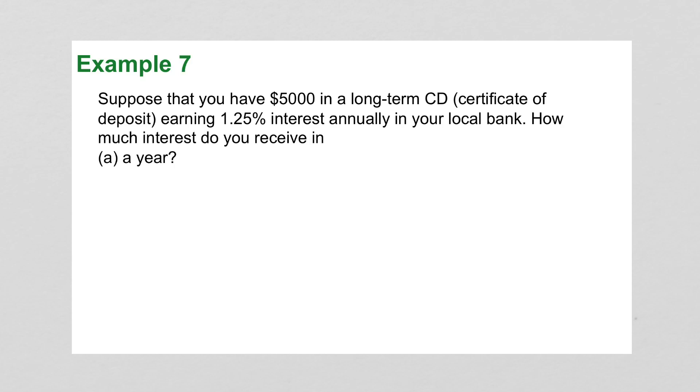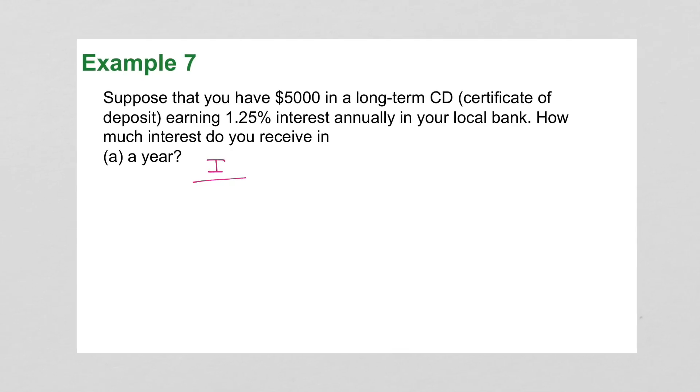Example 7 says, suppose that you have $5,000 in a long-term CD earning 1.25% interest annually in your local bank. So this isn't a loan. This is something where you've invested money and you're actually going to gain. How much interest do you receive in a year? Well, we have our interest over your amount, $5,000. And the rate is 1.25%. We don't have to change that to a decimal because we're putting it over 100. Cross multiply, and the amount of interest accumulated was $62.50.